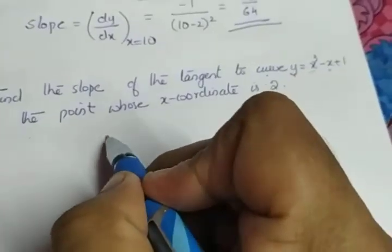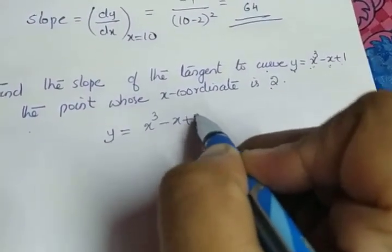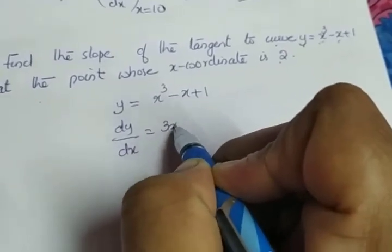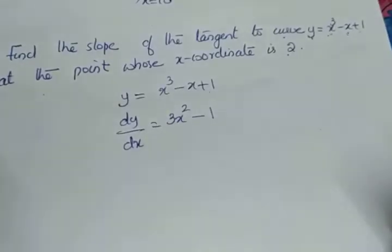So the question is just to find the slope. We will take y equals x³ minus x plus 1. Find the derivative dy/dx equal to derivative of x³ is 3x² minus derivative of x is 1. 1 is a constant, its derivative is 0.